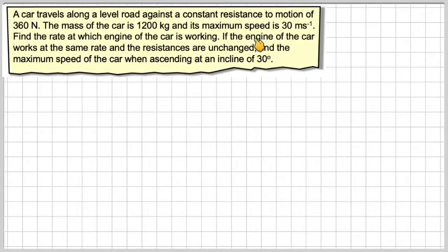If the engine of the car works at the same rate and the resistances are unchanged, find the maximum speed of the car when ascending at an incline of 30 degrees. We've got to find two things here: the rate at which the car is working when it's on level ground and then the maximum speed it can attain given that rate of working.